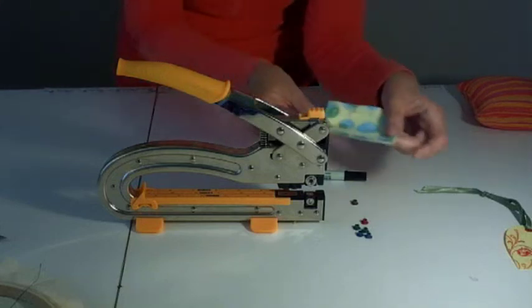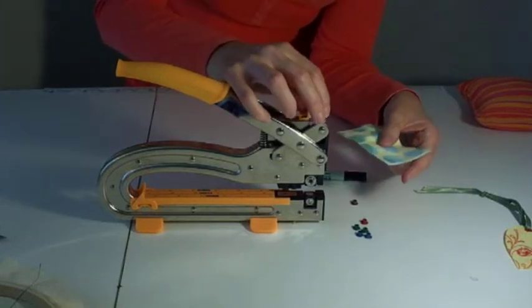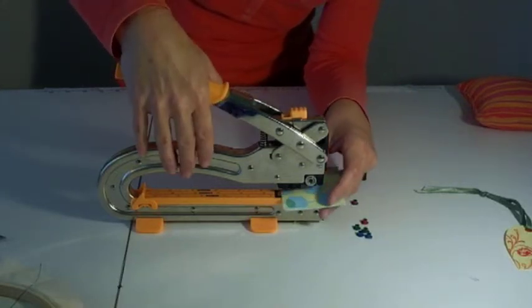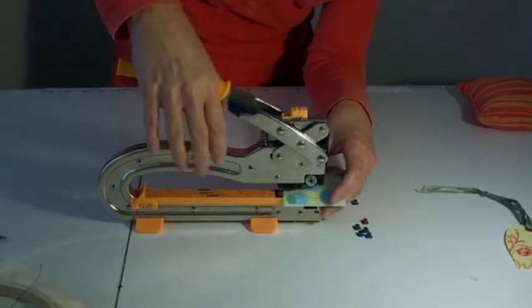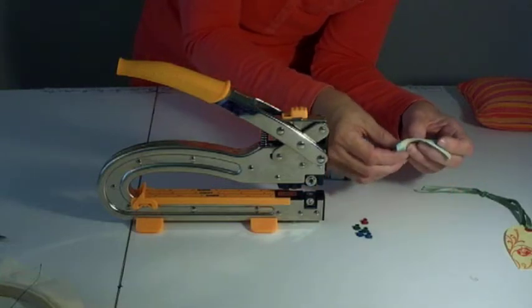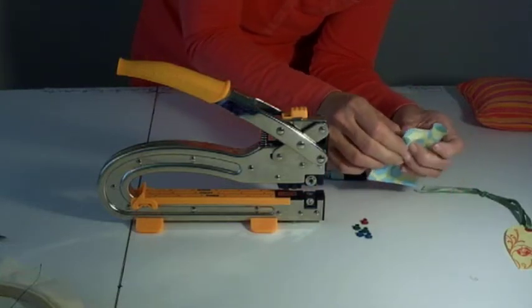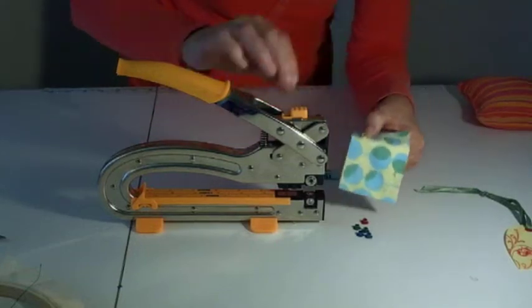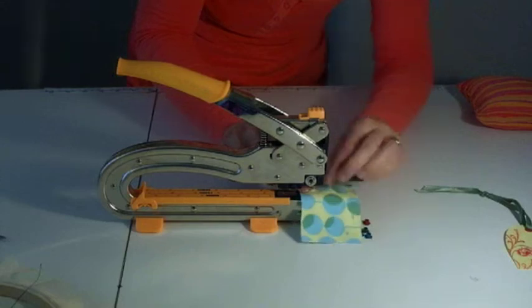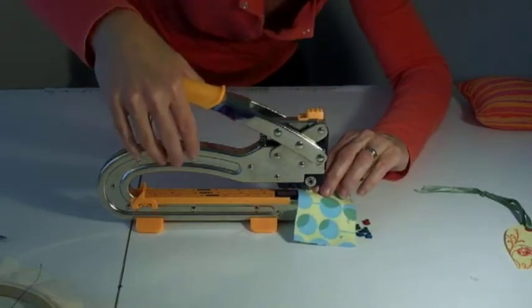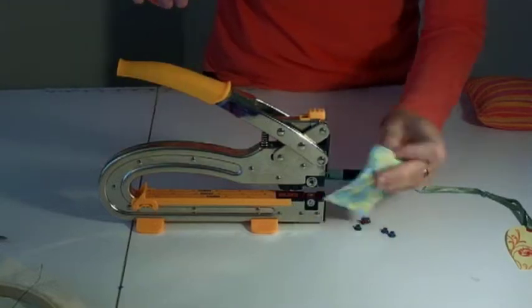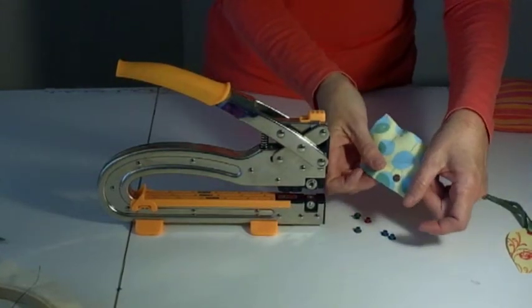Now a grommet in fabric is just as easy. You want to put this on the smaller hole. I'm going to go ahead and punch a hole and then I'm going to put my grommet in the hole. It's the exact same method. I'm going to line it up here. Press hard and there I have my grommet in my fabric.